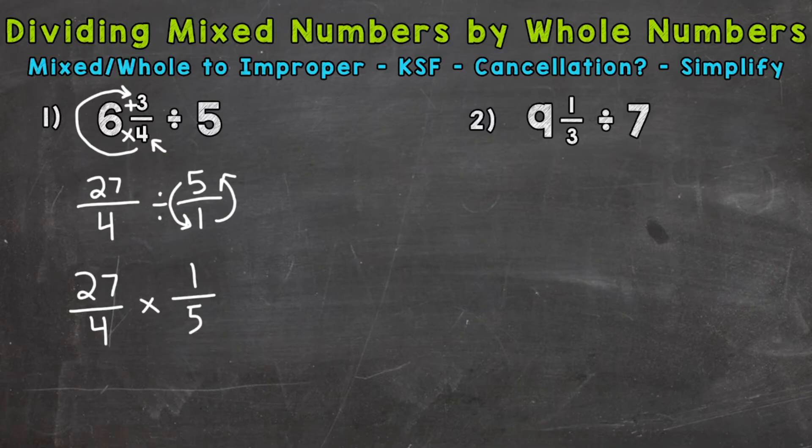In number 2, we will be able to, but we'll get to that in a minute. So we are ready to multiply straight across. So 27 times 1 equals 27. 4 times 5 equals 20.